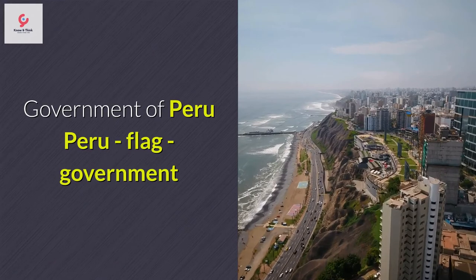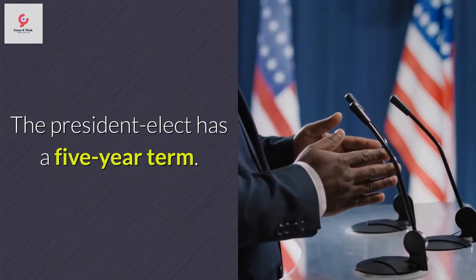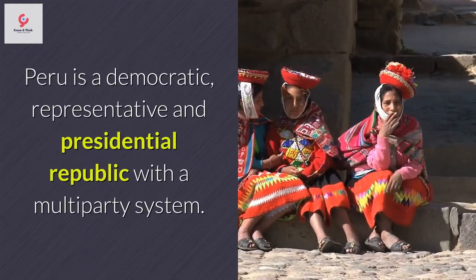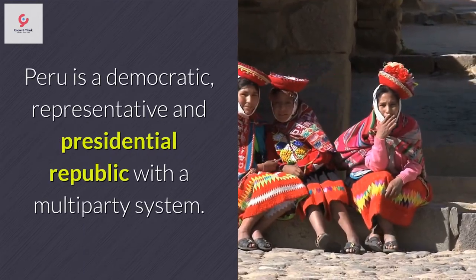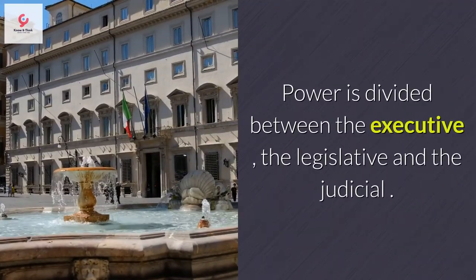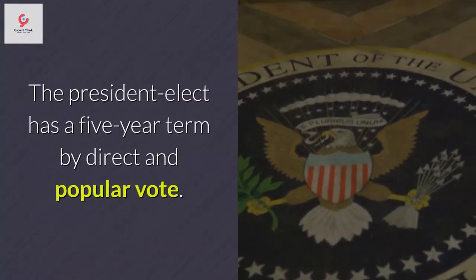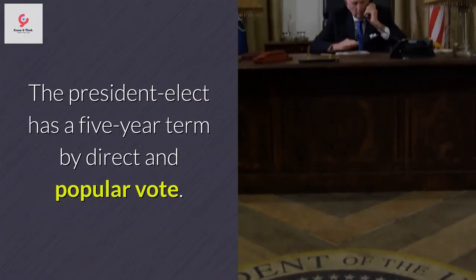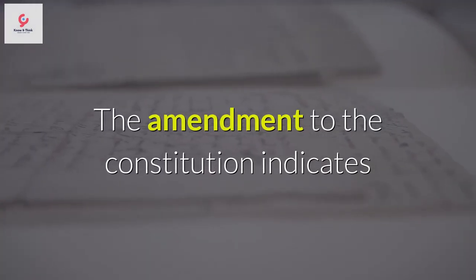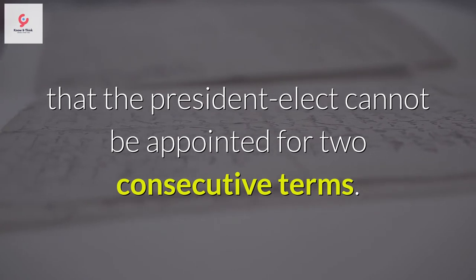Peru is a democratic, representative, and presidential republic with a multi-party system. Power is divided between the executive, the legislative, and the judicial. The president-elect has a five-year term by direct and popular vote. The amendment to the constitution indicates that the president-elect cannot be appointed for two consecutive terms.